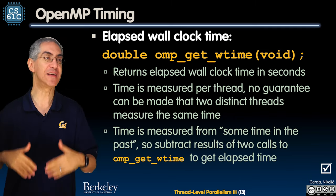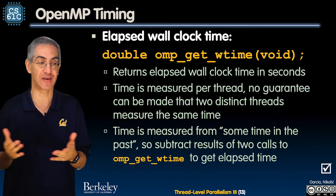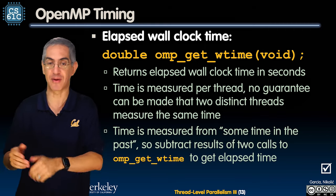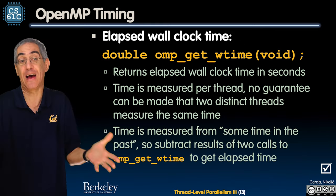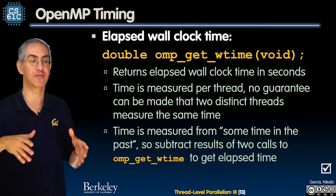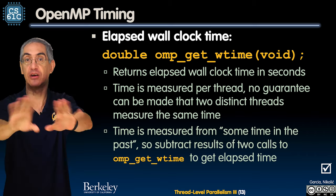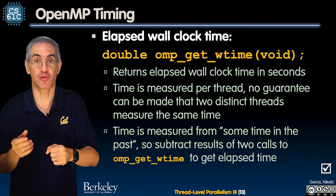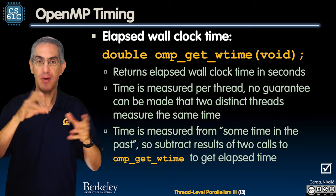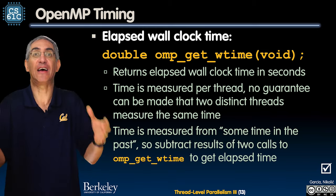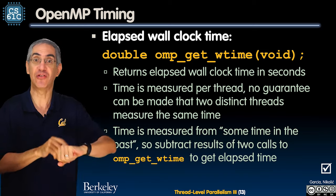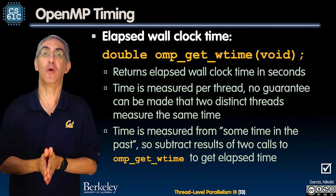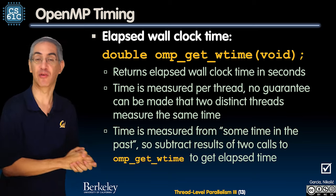Normally in algorithm analysis you count primitive operations and call that running time — not actual wall clock time. But when running parallel code, you often do use wall clock time, because you care less about how many steps each thread takes and more about how much faster the parallelization is compared to before. OpenMP provides software support for this: omp_get_wtime(), which returns a double representing elapsed wall clock time in seconds from some reference point in the past.